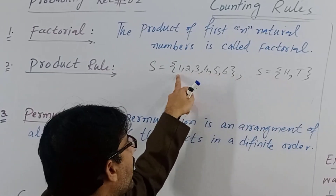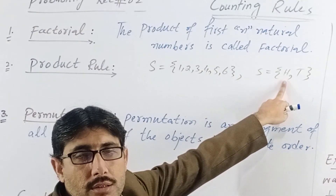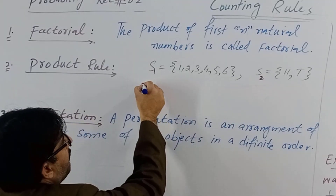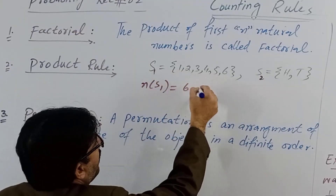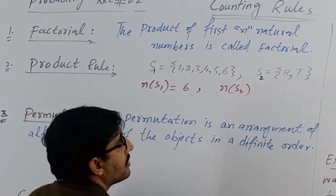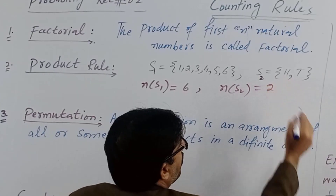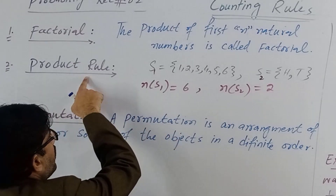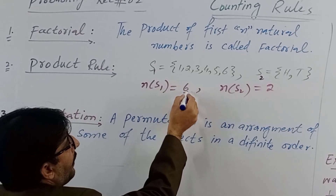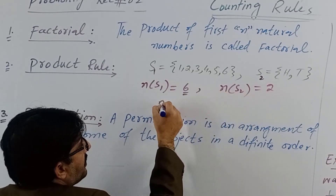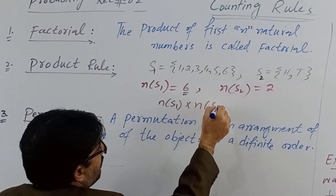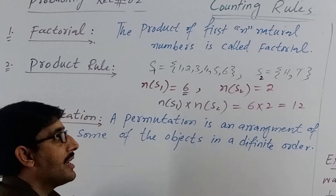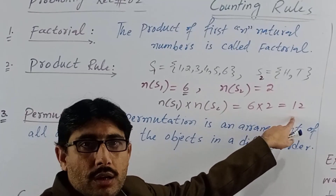If both experiments are performed simultaneously — rolling the die and tossing the coin at the same time — the total number of outcomes in the compound sample space is found using the product rule. The number of sample space outcomes for S1 multiplied by number of sample space outcomes for S2 equals 6 multiply 2, which equals 12. So there are 12 outcomes.